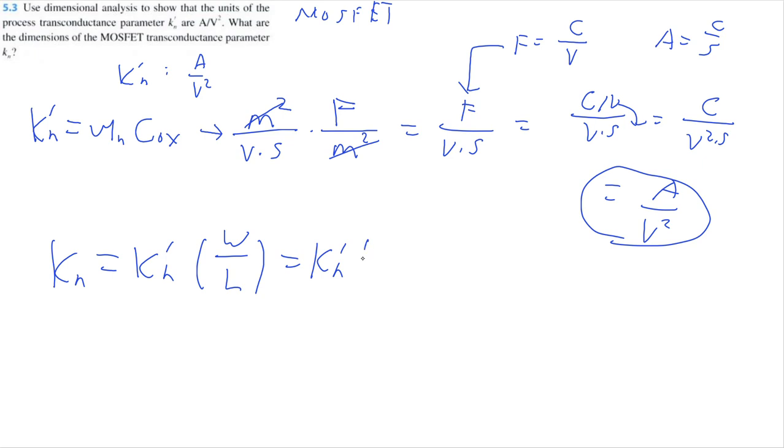So that's essentially just multiplying KN prime by the length which has units of meter. So it's essentially just the same amp per volt squared. It's the same exact units, same dimensions.